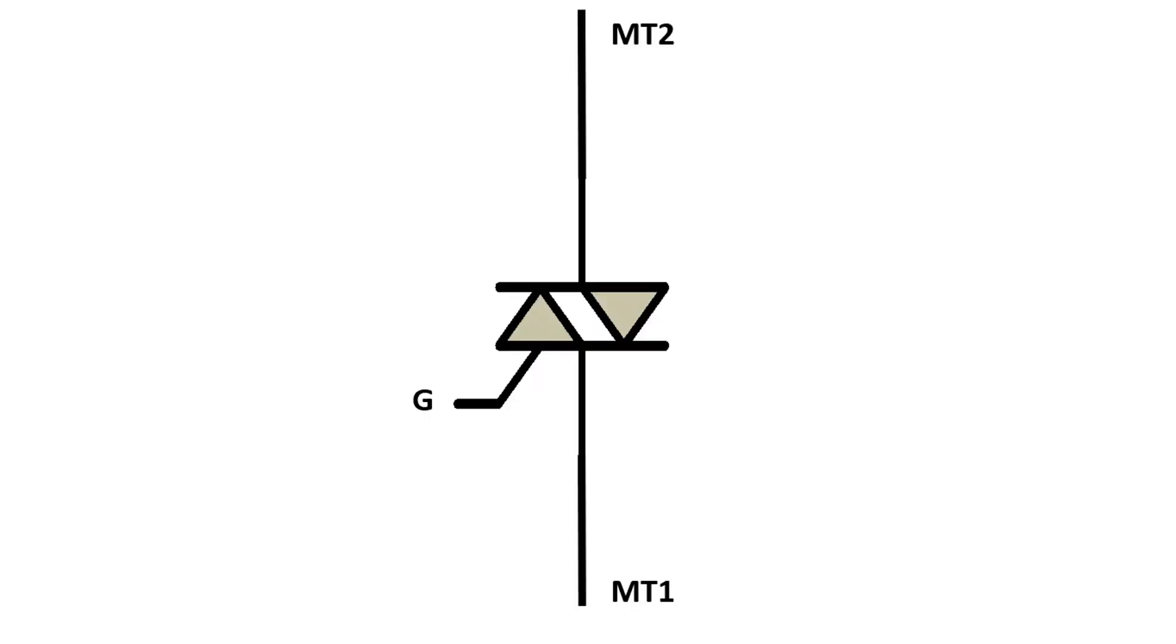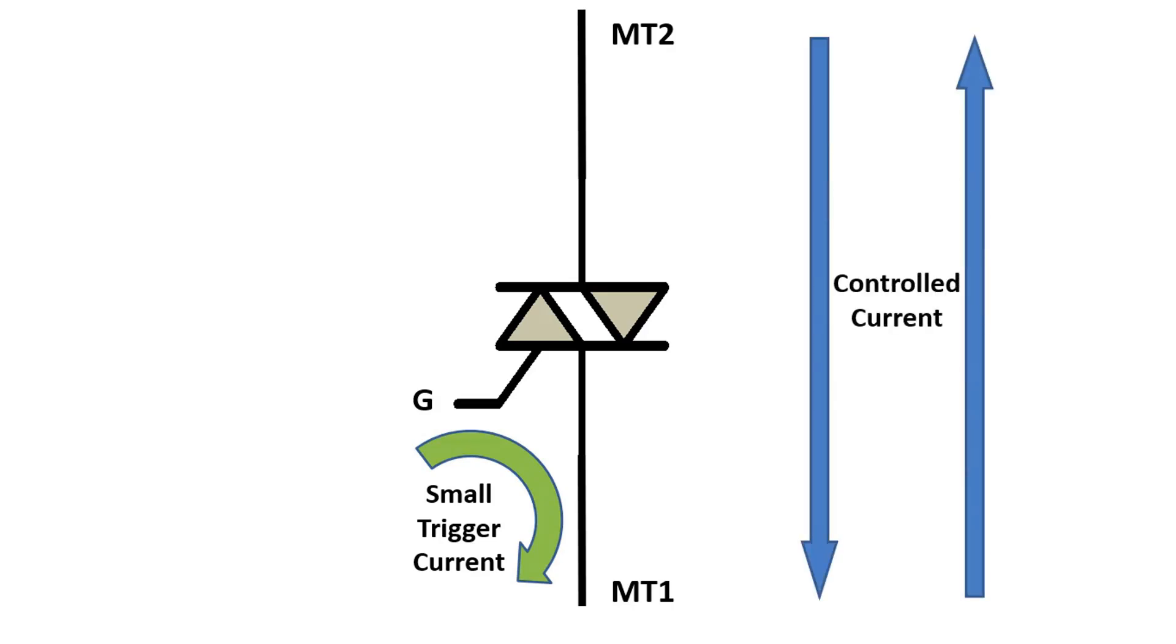So, how does this power electronic circuit element work? Let's look at it now. When a small trigger current comes from the gate end of the TRIAC, bi-directional current flow can be provided between the MT2 and MT1 pins. In other words, a small trigger current from the gate end can control a large AC current between MT2 and MT1.